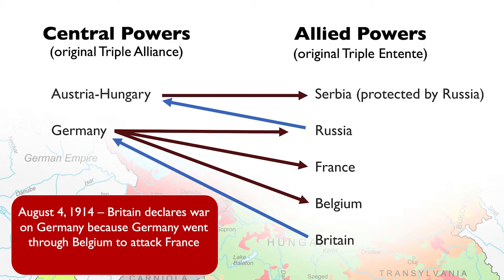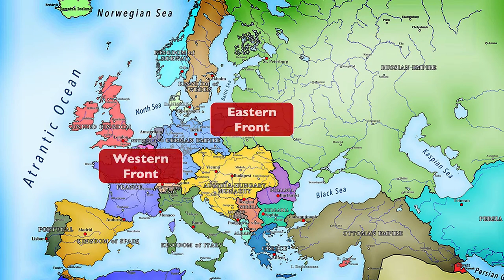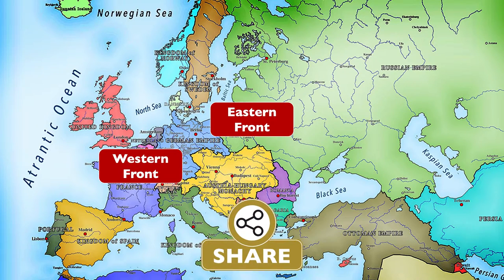Looking at this map, there were two major fronts. The Western Front was mostly Germany versus Britain and France. The Eastern Front was mostly Germany and Austria-Hungary versus Russia. There were more fronts and more battlefields, but these were some of the major fronts of the war.